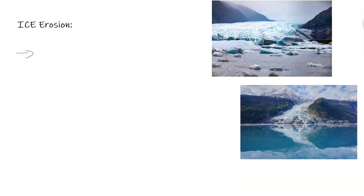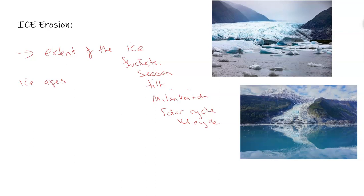When you discuss ice erosion, you'll discuss the extent of the ice. Then discuss the locations, alpine and continental, but the extent of the ice can fluctuate based on the season, based on the tilt and the Milankovitch cycles. It can also fluctuate through the solar cycle, the 14-year cycle and beyond, and also can fluctuate based on the ice ages, whether it's an ice age or an interglacial period.